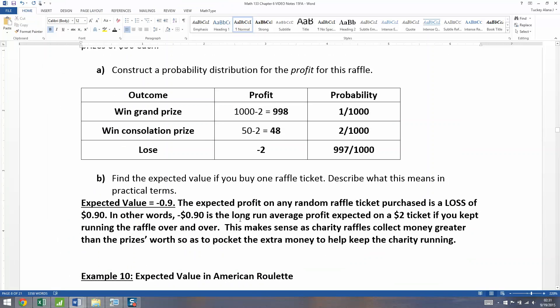So this means the expected value is negative 0.9. What that means is that the expected profit on any random raffle ticket purchased is a loss of 90 cents. In other words, the negative 90 cents is the long-run average profit expected on a $2 ticket if you kept running this raffle over and over. Where students always get confused is they think, well, I couldn't lose 90 cents. And that's true. You either lose $2 or you win a prize. But what's happening is if you played this raffle once and then did it again and again, then you'd expect your average to be negative 90 cents. Now this makes sense as a charity raffle collects money greater than the prize is worth, so as to pocket the extra money to help keep the charity running. So when you go to a charity raffle, you don't expect to walk out with profit. You expect to walk out with loss.